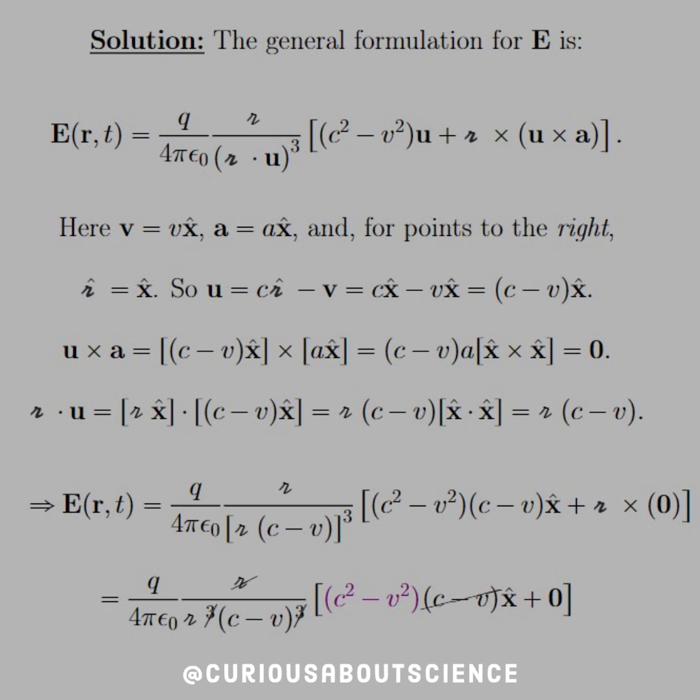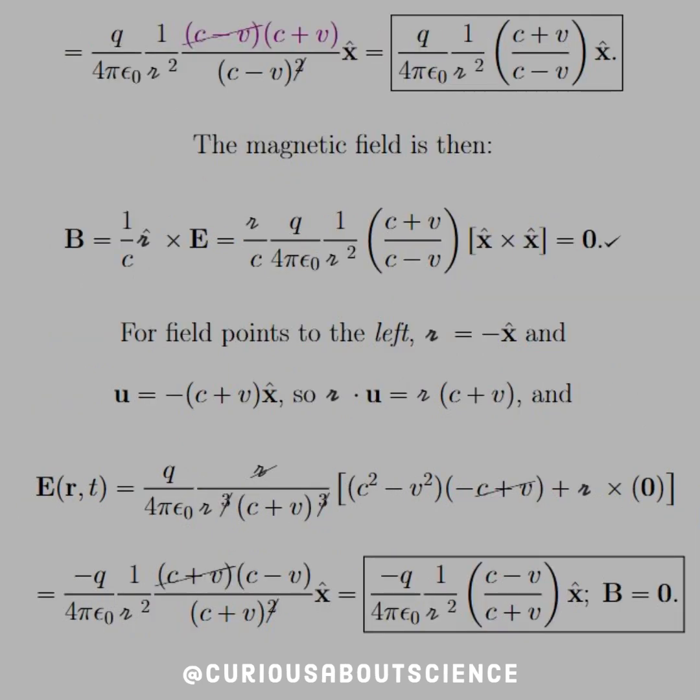Okay? Notice that the term in purple looks like the difference of squares. And so what we're able to do is, well, factor like difference of squares. So that, once again, allows us to cancel a factor of C minus V in that denominator.